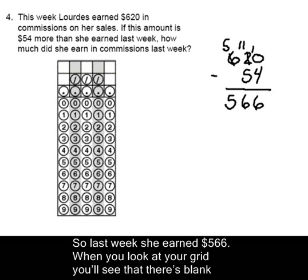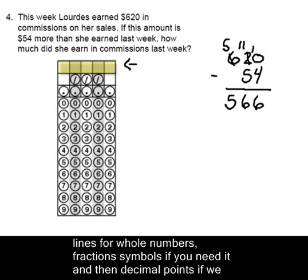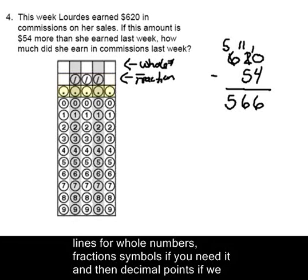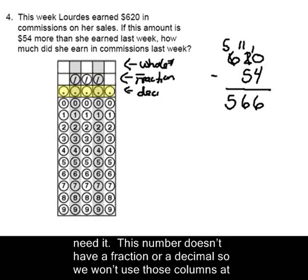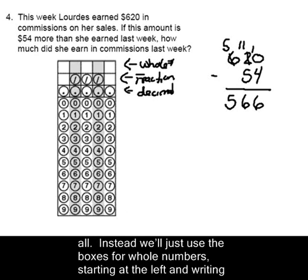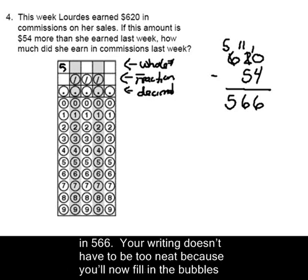When you look at your grade sheet, you'll see that there are blank lines for whole numbers, fraction symbols if you need them, and decimal points if we need them. This number doesn't have a fraction or a decimal, so we won't use those columns at all. Instead, we'll just use the boxes for whole numbers, starting at the left and writing in 566.